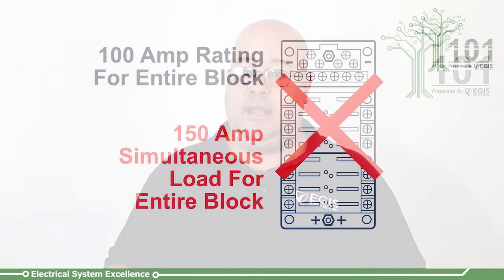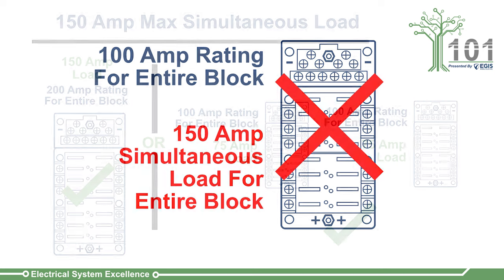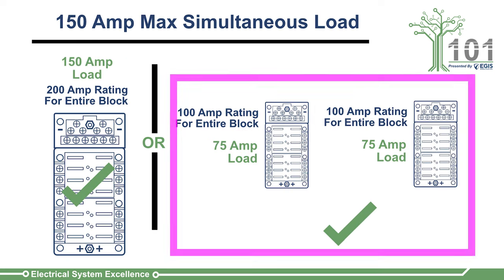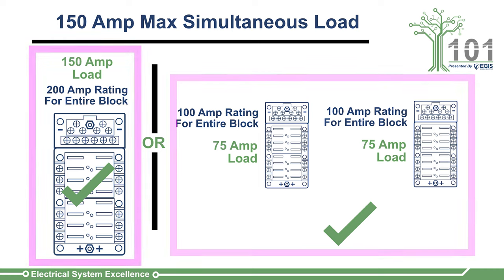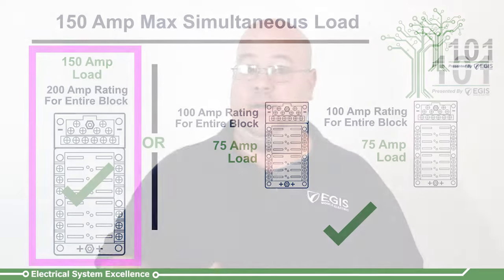If a power loading analysis indicates there is too much potential cumulative current draw, the system designer will typically feed power to an additional fuse block and split the potential electrical current, or alternatively find a fuse block rated for more input current.